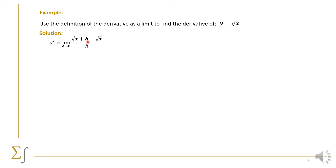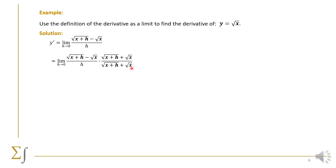If we substitute h=0, we get 0 in the numerator and 0 in the denominator, which is undefined. We need to eliminate the zero factor. We multiply by the conjugate of the numerator — the conjugate of √(x+h) minus √x is √(x+h) plus √x. We multiply and divide by this same quantity.